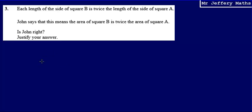This is question 3 from a series of videos taking a look at the NXL practice papers. Here we're told that each length of the side of square B is twice the length of the side of square A.